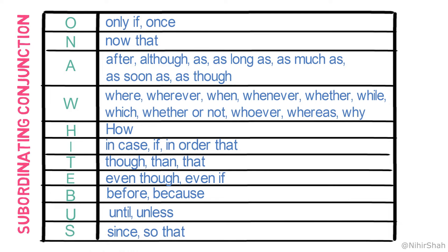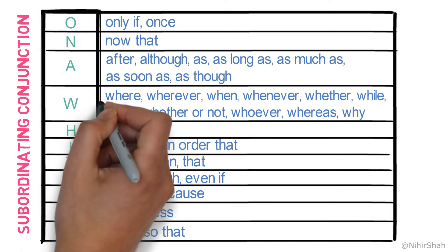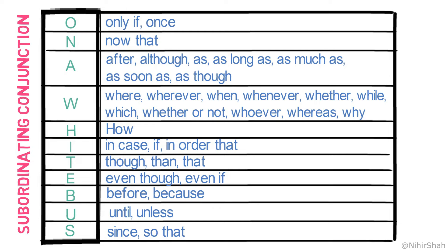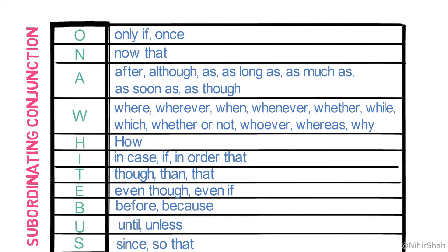This is the list of conjunctions. There are too many conjunctions, right? But let me give you a trick to remember all of them. I have just picked the first letter of all of them and made this phrase 'on a white bus.' So, just remember this phrase 'on a white bus' and you will surely remember all the conjunctions if you do a lot of practice.